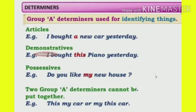Third, possessives. Example: 'Do you like my new house?' In this sentence, 'my' is a determiner. It is a determiner because it specifically tells us about the house — which house? My house. That's why 'my' is a determiner here.